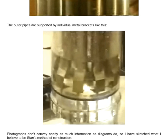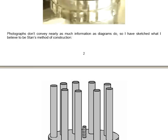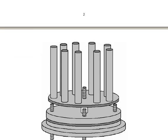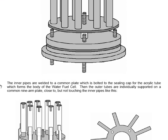The outer pipes are supported by individual metal brackets, and the brackets are seen here in this photograph. Photographs don't convey nearly as much information as diagrams do, so I have sketched what I believe to be Stan's method of construction. The base of the plastic see-through cylinder is a plastic plug end, which has got a rubber O-ring as a seal against the pipe itself.